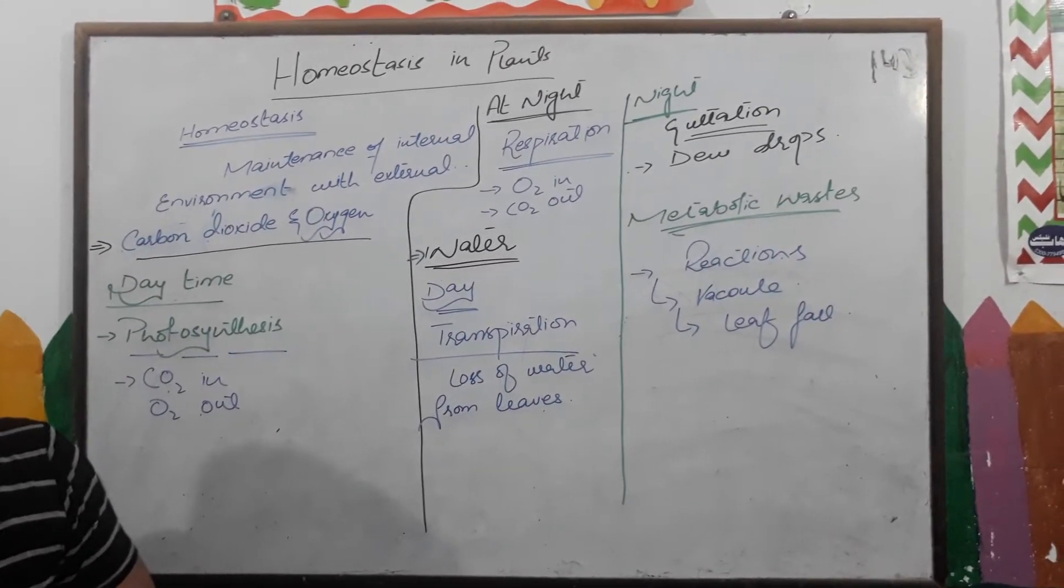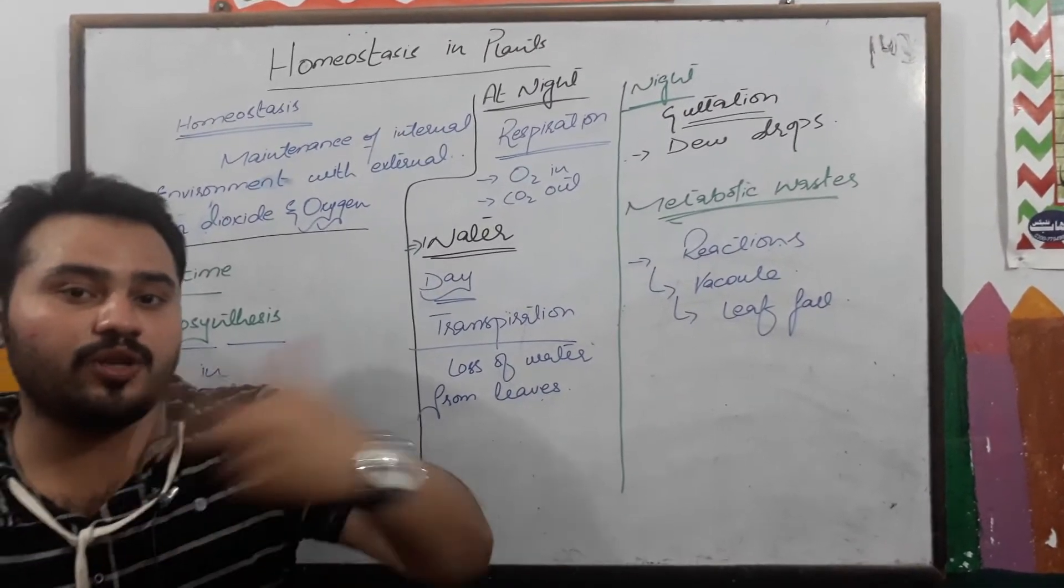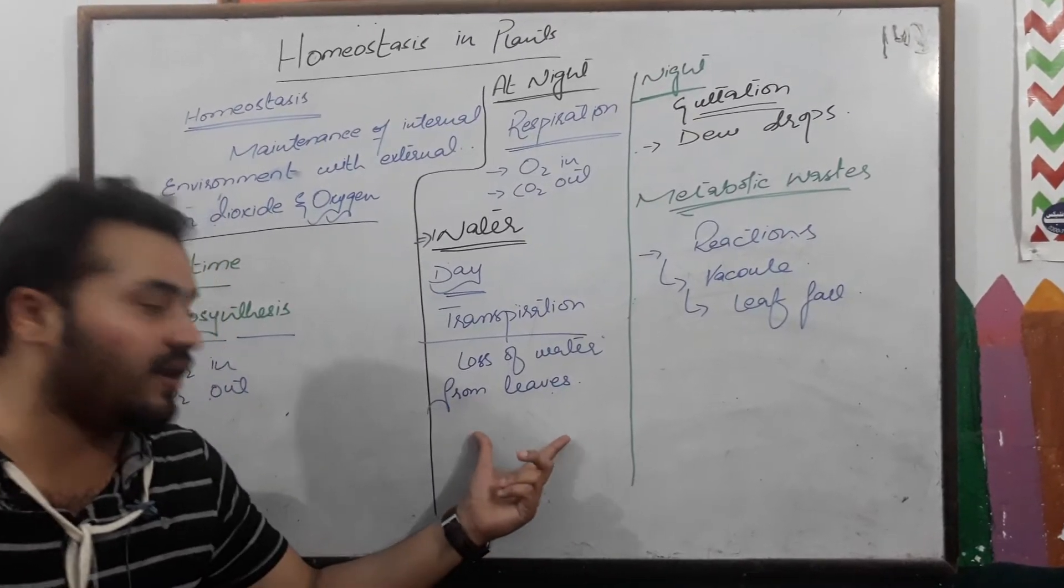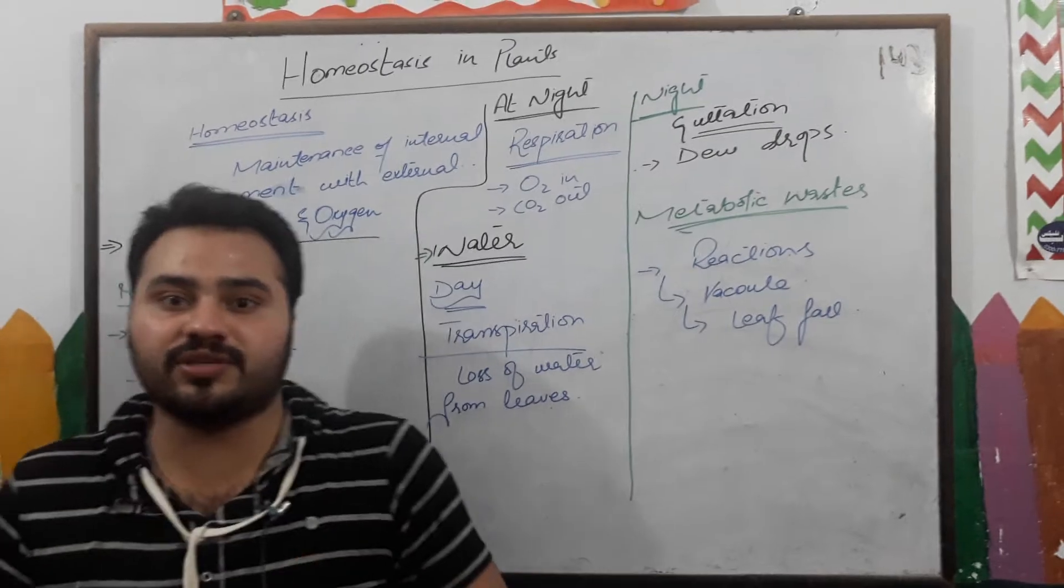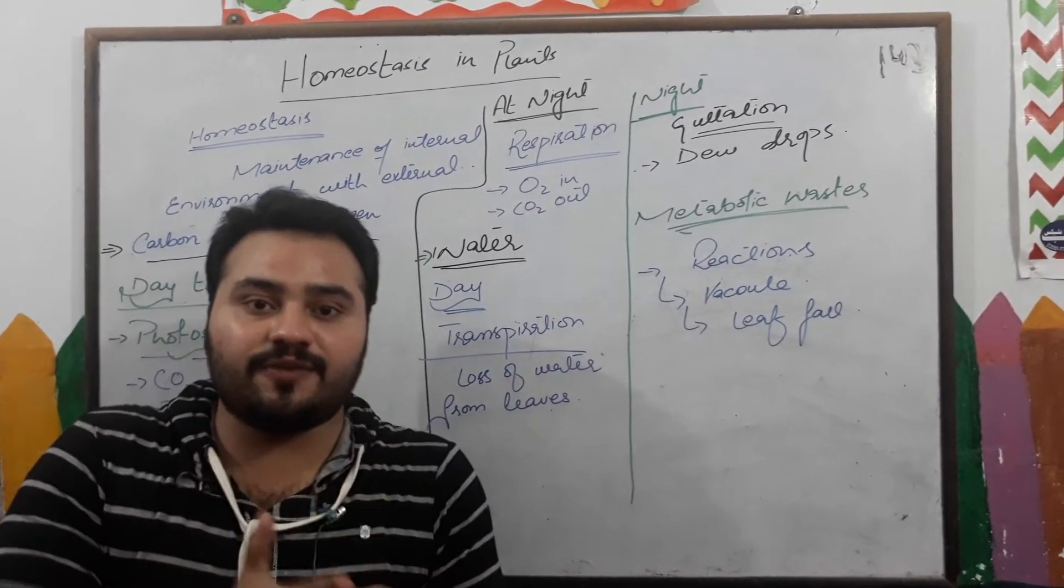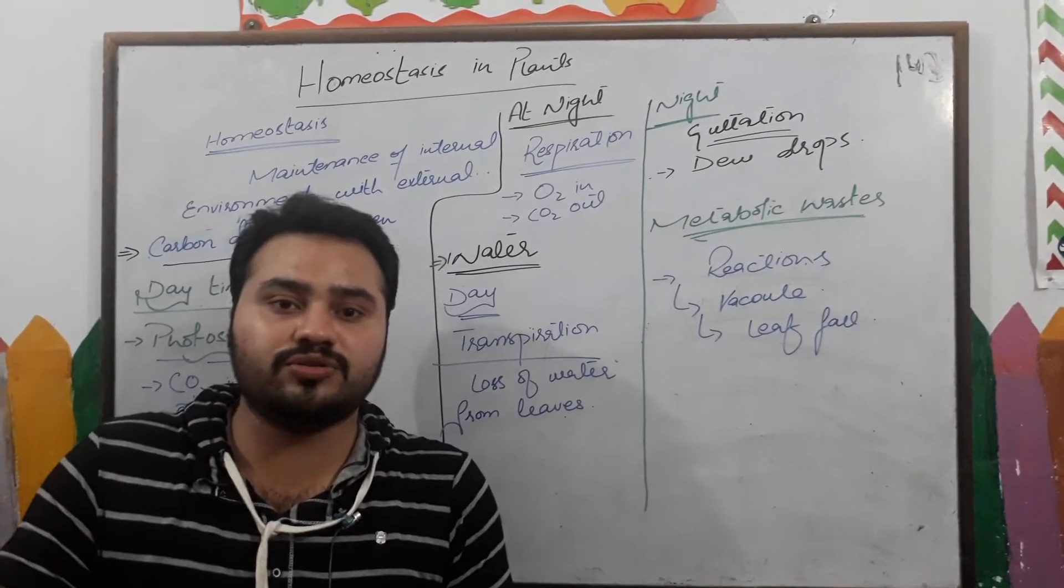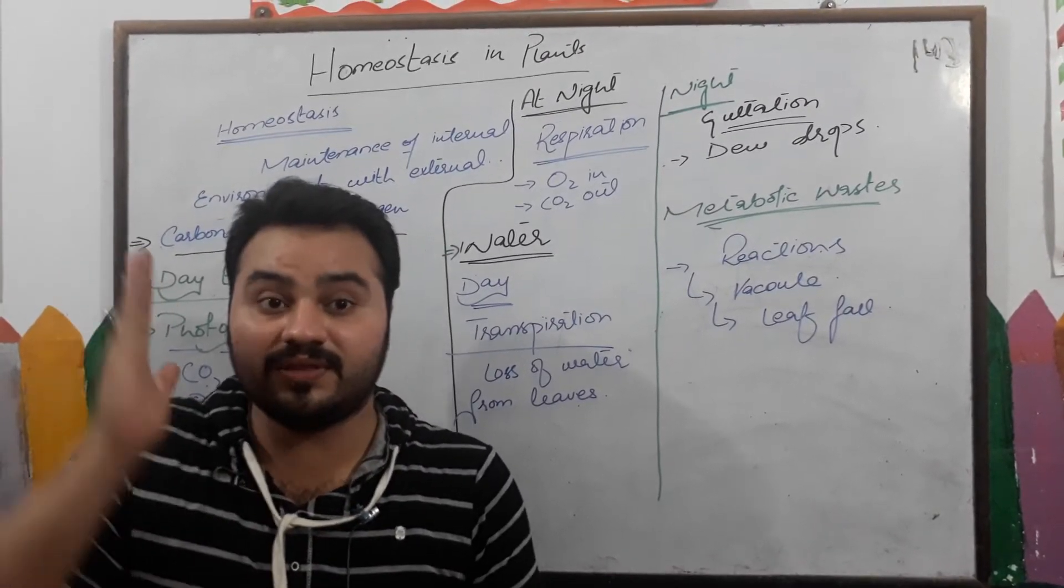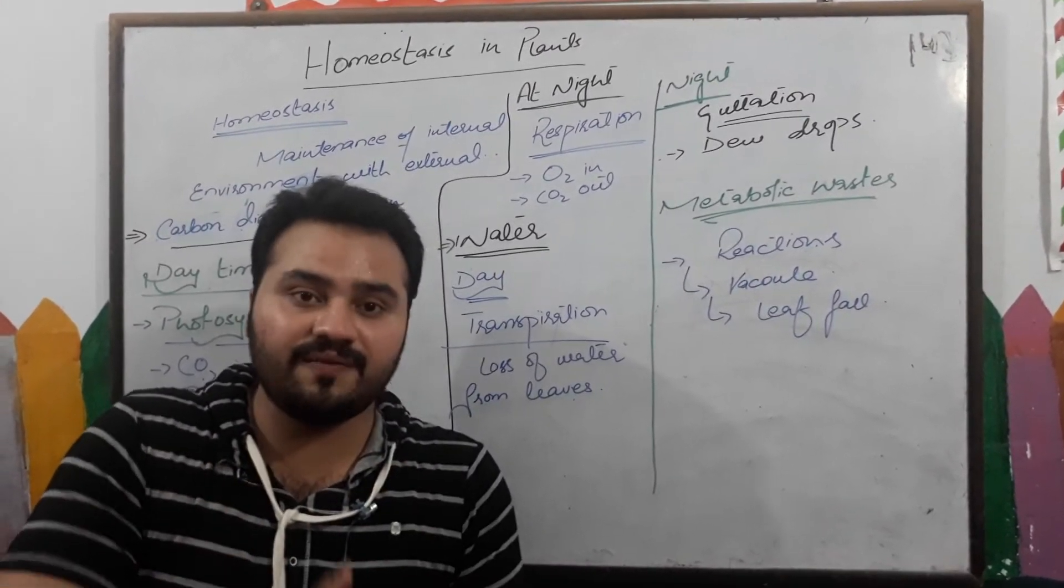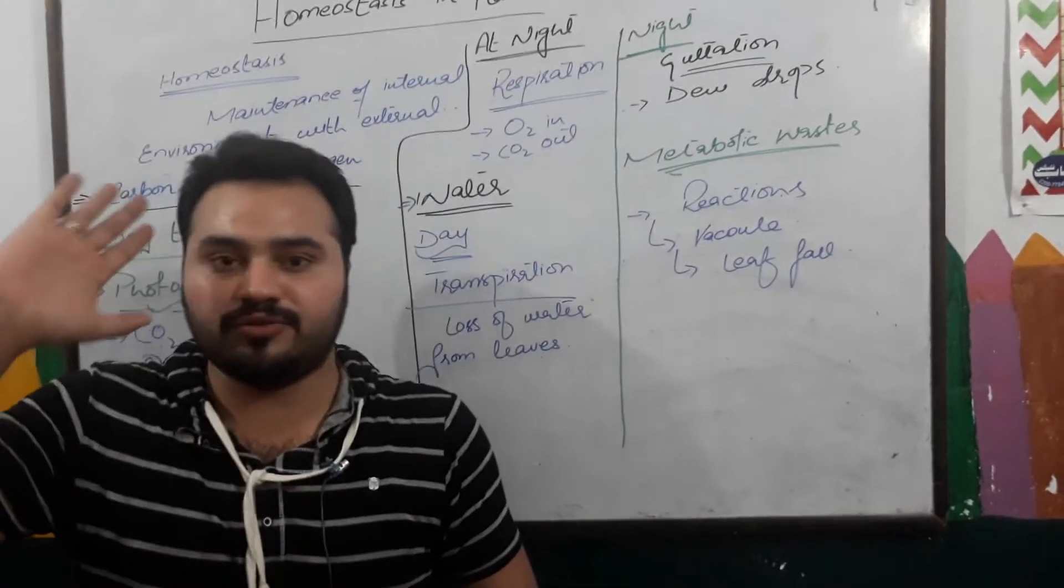It has two significances. One, evaporation is a cooling process - plants can remain cool from transpiration. And second is homeostasis. Excess water which is not used in photosynthesis is expelled out from the leaves. This is homeostasis - one thing which is in higher quantity inside is expelled out.